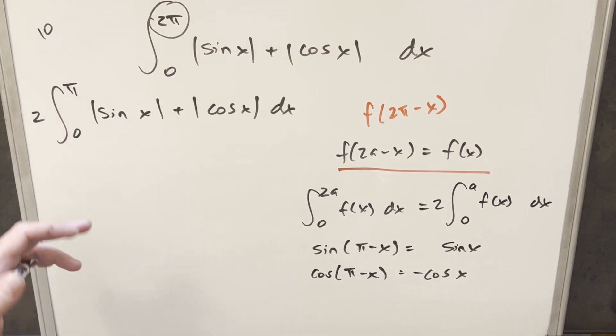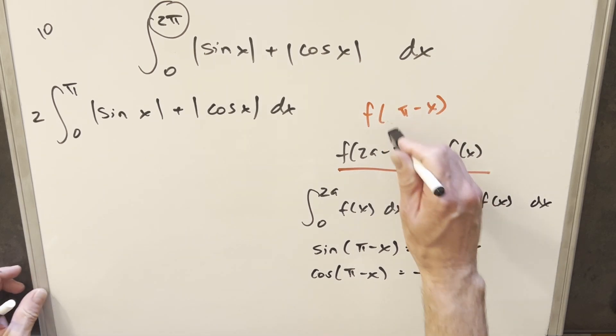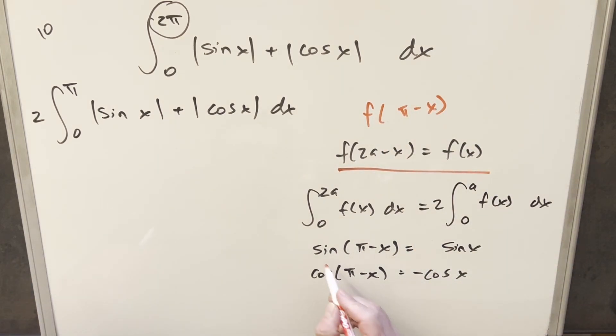But now we can just do the exact same thing again, but now our upper bound, our 2a value is π. So we need to evaluate f of π minus x. For that, we have our sine of π minus x, cosine of π minus x. The same kind of thing that was happening. It's just the minus signs on the cosine instead of the sine. Now, the absolute value is going to wipe that out. So we can use this principle here.